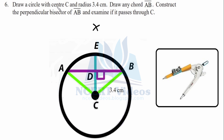Question 6: Draw a circle with center C and radius 3.4 cm. Place the compass and draw the circle. Now draw a chord AB — a chord connects two points on the circumference and does not pass through the center. Construct the perpendicular bisector of line segment AB and examine if it passes through C.